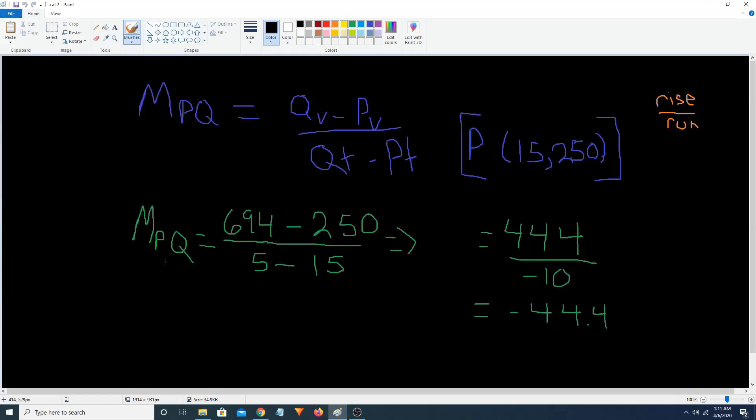So let's see right here. So now all we have to do is subtractions and division. So 694 minus 250 equals 444. 5 minus 15 equals negative 10. And that ends up equaling negative 44.4. And that's our average velocity.